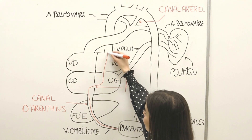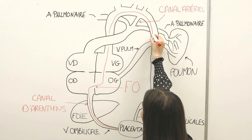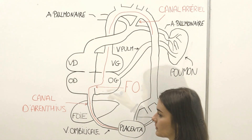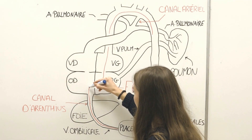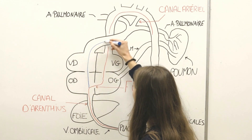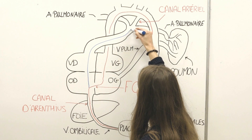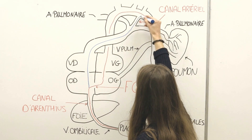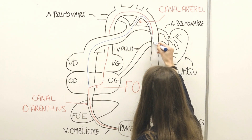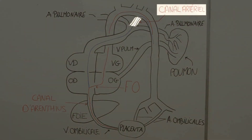Le sang poursuit son trajet dans le ventricule gauche, puis sera expulsé dans la crosse de l'aorte. Le reste du sang n'ayant pas franchi le foramen ovale passera par le ventricule droit, puis l'artère pulmonaire. À ce niveau, deux possibilités s'offrent au sang. La plus grande partie empruntera le troisième shunt : le canal artériel, reliant l'artère pulmonaire à l'aorte descendante.